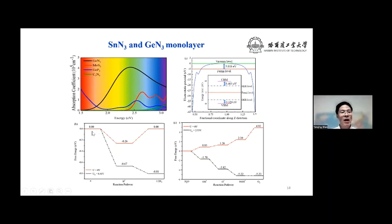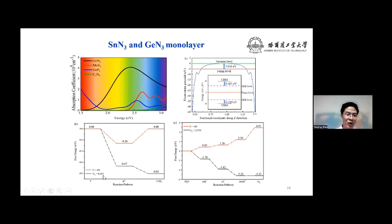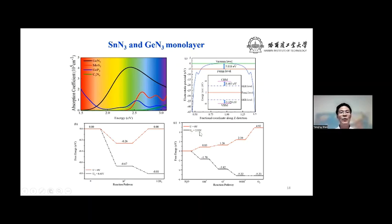For HER, at U equal to 0, the delta G is about minus 0.26 eV. The potential provided by photo-generated electrons, 0.41 V, makes the energy profile downhill, so HER can proceed without an external electric field. For OER, the limiting potential is 2.53 V, so the OER overpotential is 1.3 V. The potential provided by the holes is about 0.33 V, so OER needs an external electric field.